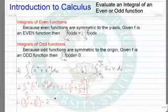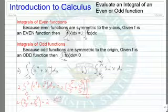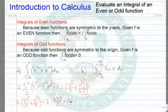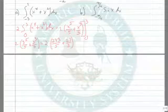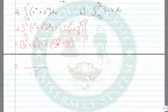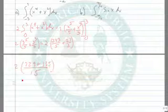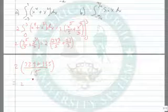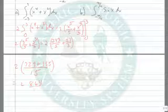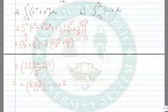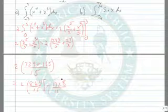2 times 3 to the fifth is 243 over 5 plus 27 over 3. So if we get a least common denominator here of 15, 3 times 243 gives us 729 plus 5 times 27 gives us 135. So we have 2 times 864 over 15, which gives us 1728 over 15.